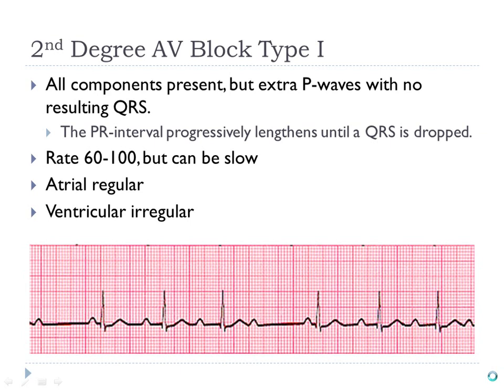After the QRS is dropped, the cycle restarts with another P wave and follows the same sequence again — sometimes the patient will drop every third beat. If you measure the distance between each P wave, it's the same — P waves are regular, but the QRS is what's irregular because one gets dropped.